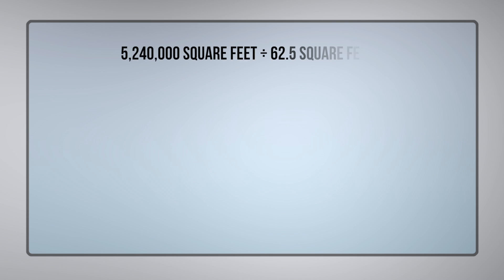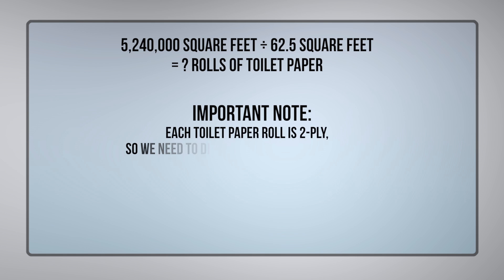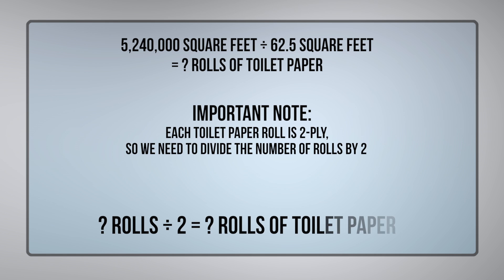Now we'll use this number to calculate the number of rolls of toilet paper that can be made from one parent roll. Keep in mind that the toilet paper is 2-ply, so we'll have to divide the total number of rolls by 2.